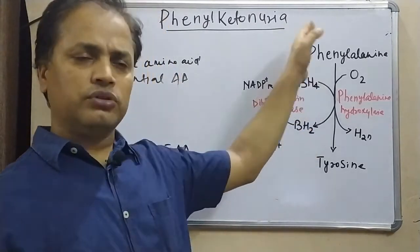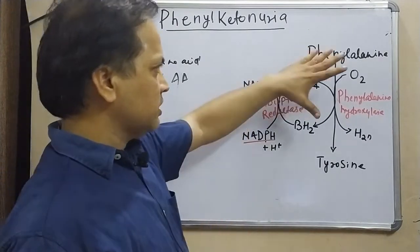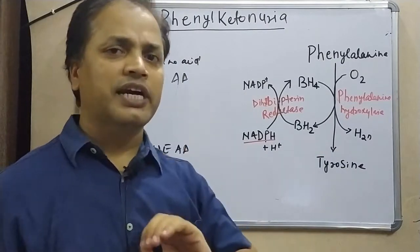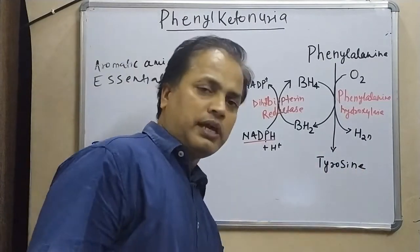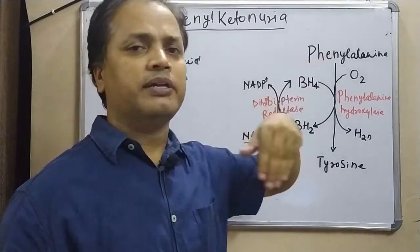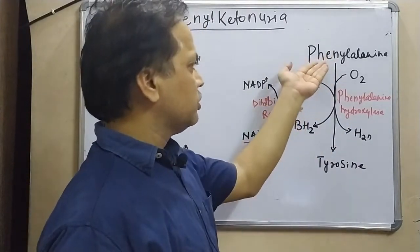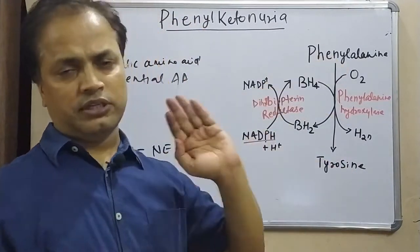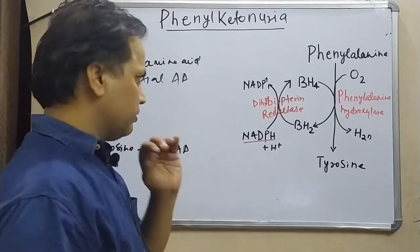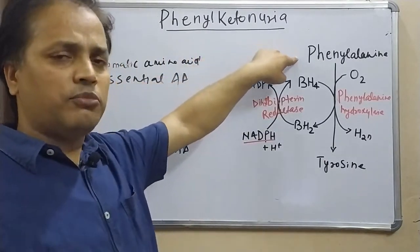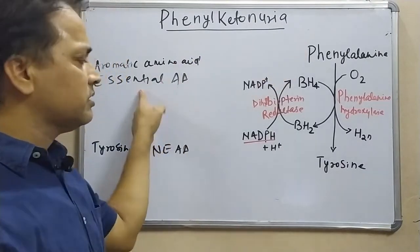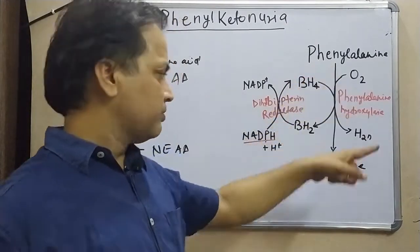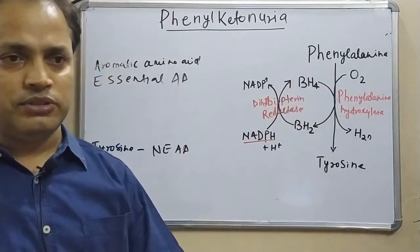With BH4 regenerated, the reaction continuously goes on. Phenylalanine is converted to tyrosine and then metabolized. Tyrosine can be obtained either directly from phenylalanine conversion or from the diet. Since tyrosine is obtained from phenylalanine, and our body cannot synthesize phenylalanine, phenylalanine is essential while tyrosine is non-essential.